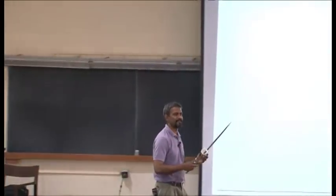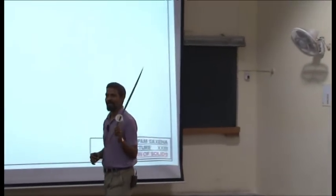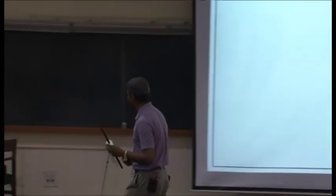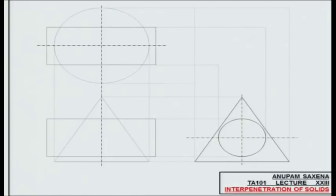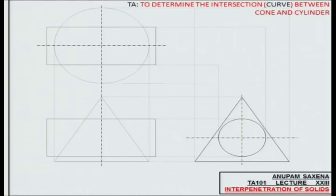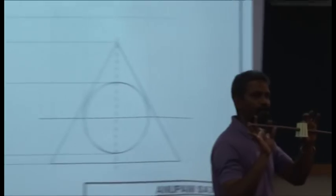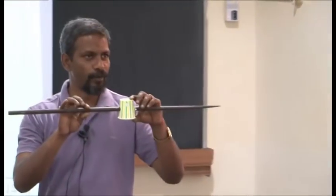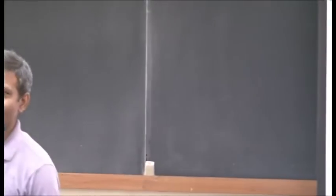For today's lecture I am going to be using a special pointer — my tea cup. The point I am trying to drive through is interpenetration of solids. This is the first example: imagine this is a cone, this is a cylinder, and you have put the cylinder through the cone. You would have made cuts on both sides of the cone — the problem is to figure out the shape of these cuts.